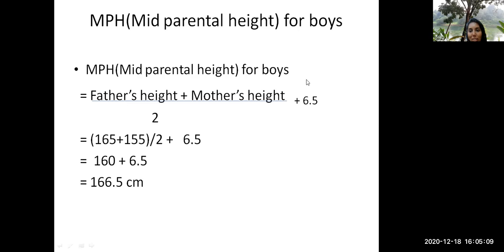Some books are like this: father's height plus mother's height plus 13, the whole divided by two. Both are the same. Don't get confused. So both these formulas should be very thorough. When you actually calculate it, you get 165 plus 155 centimeters divided by two plus 6.5. The answer is 166.5 centimeters.